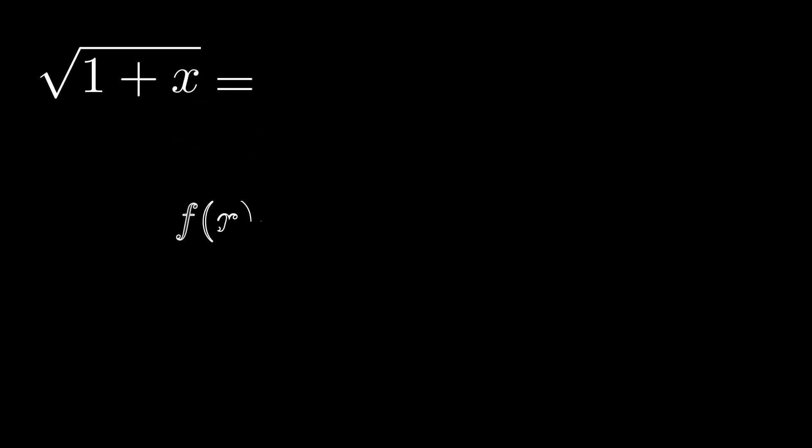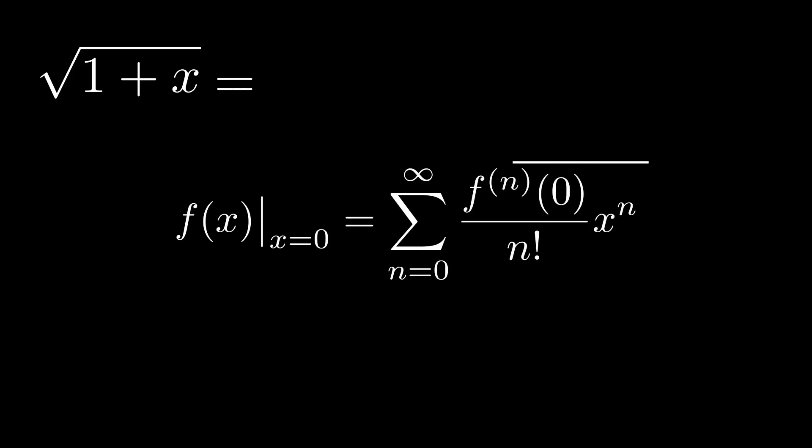The general form of the Taylor expansion is the following. In essence, it represents a polynomial, or a sum of terms with increasing power of x, and the coefficient, the number in front of every term, is proportional to various derivatives of our original function, filled in in x is equal to 0.